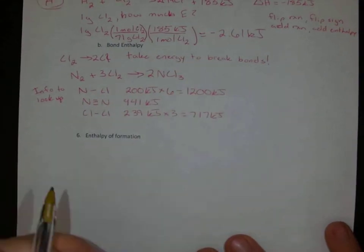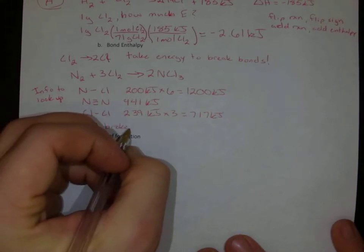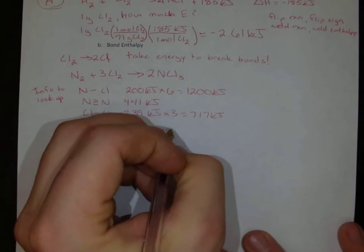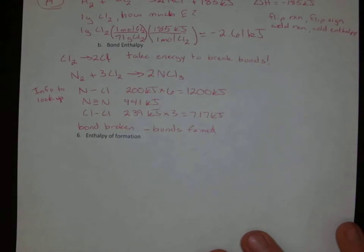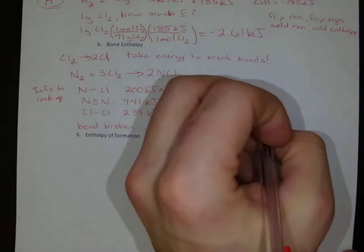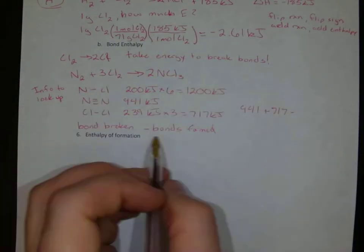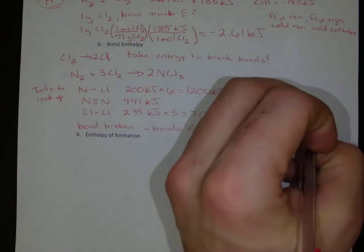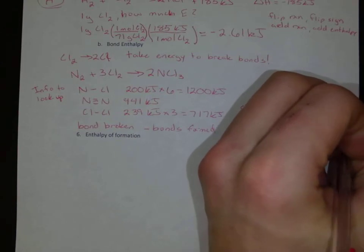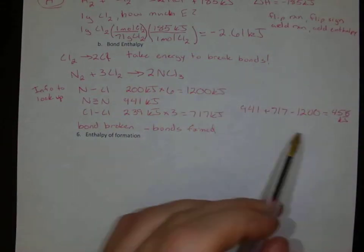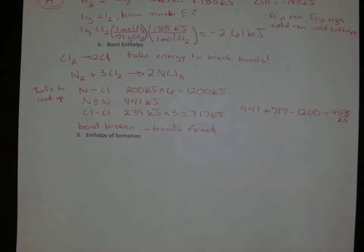So what we can do now is we can do the bonds broken minus the bonds formed to get our overall energy change. So we would do 941 plus 717 minus our bonds formed, which is 1,200, and that equals 458 kilojoules. So it took 458 kilojoules to get this reaction to occur. We've got one more thing here that we'll come back for in a second.